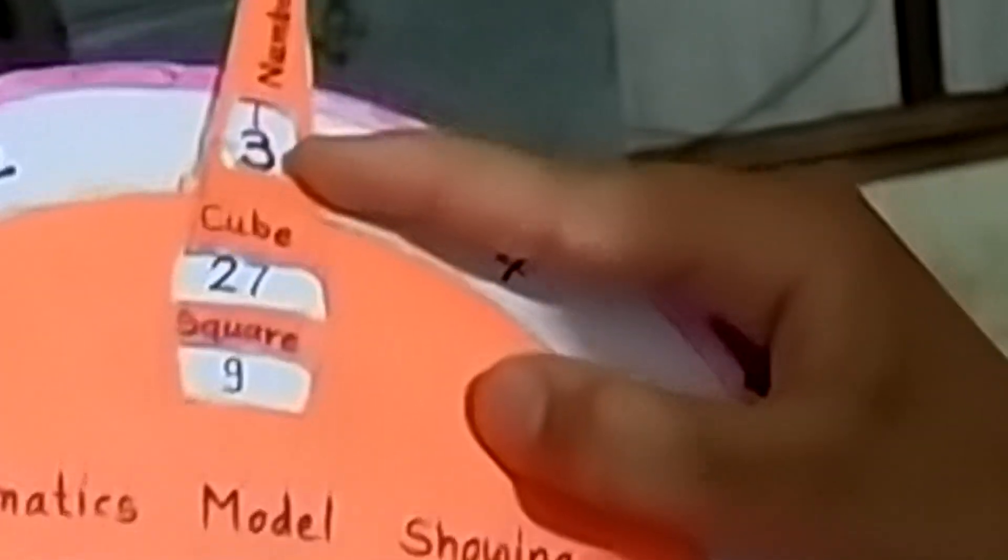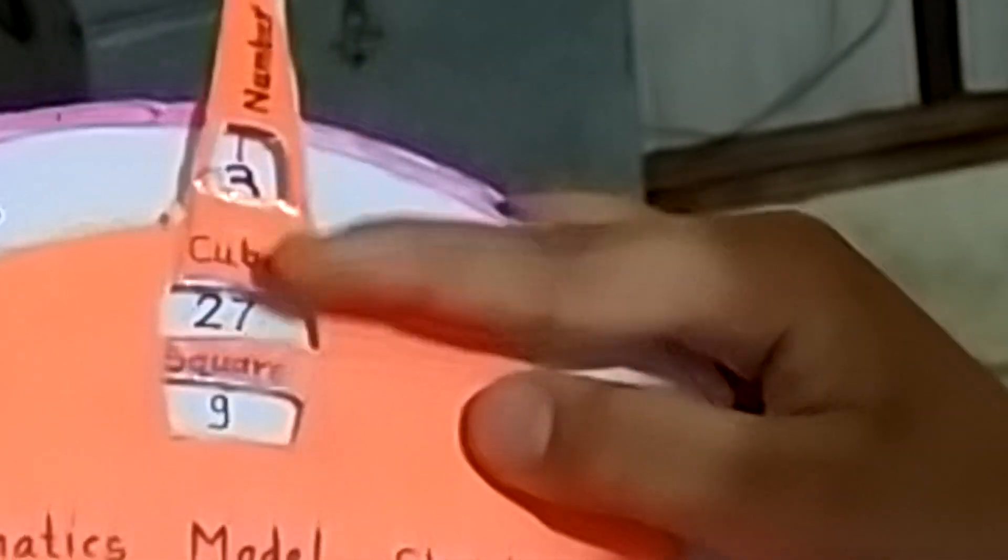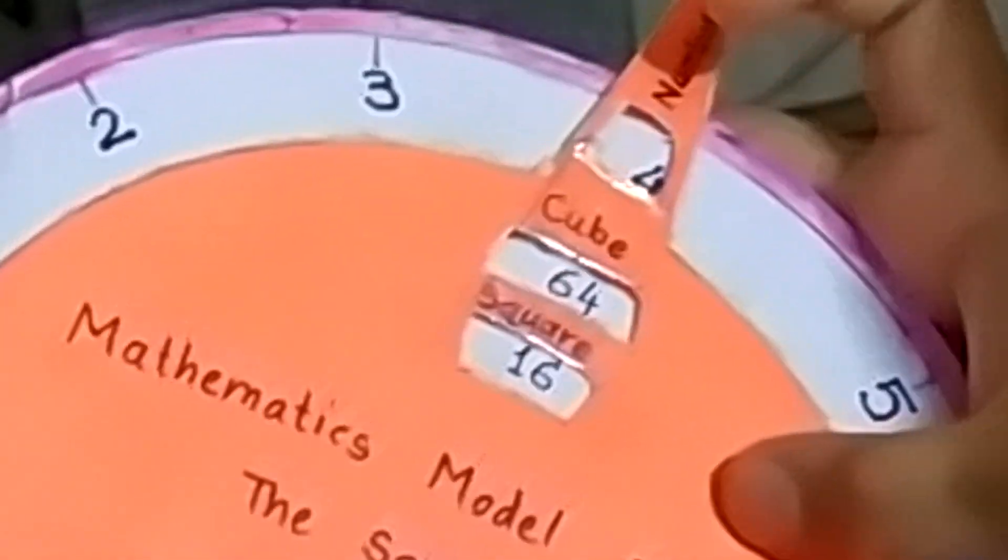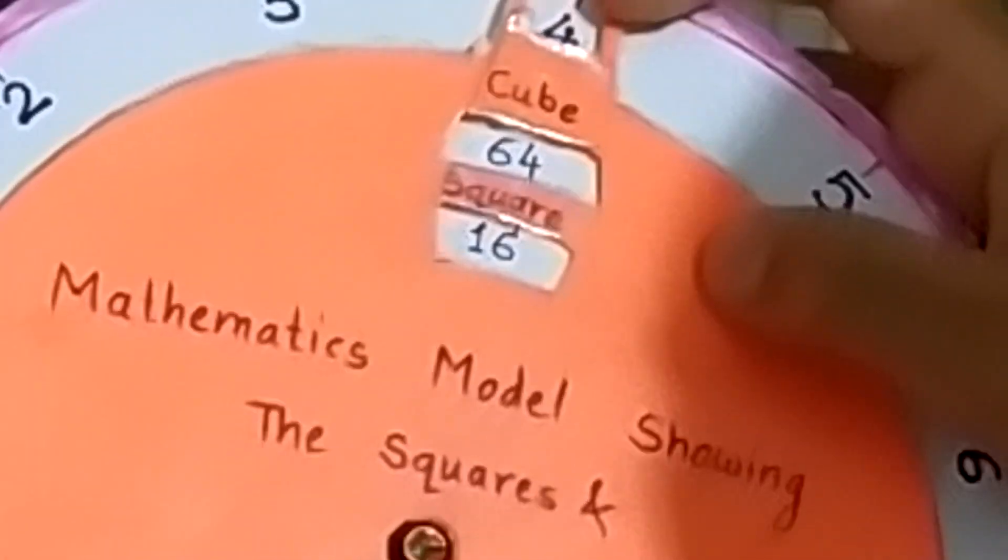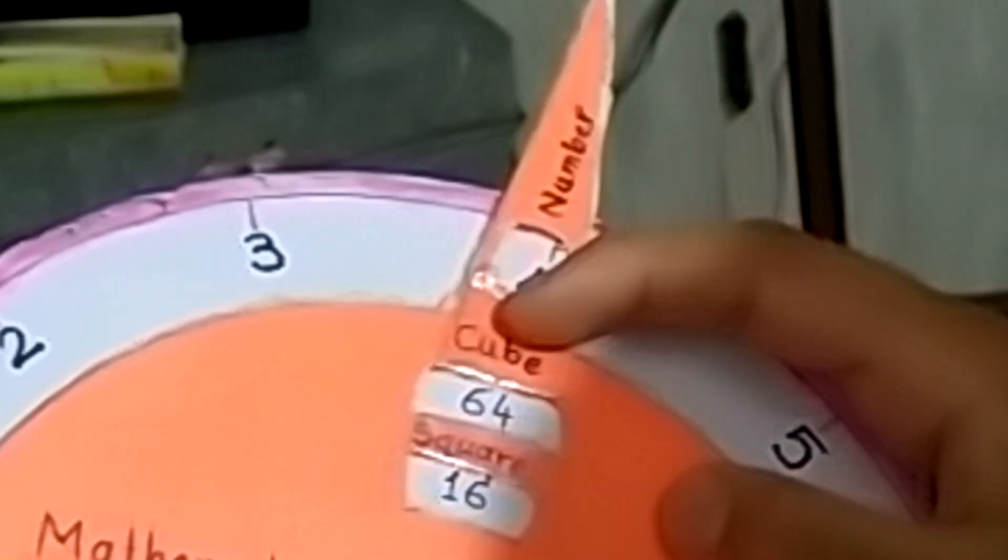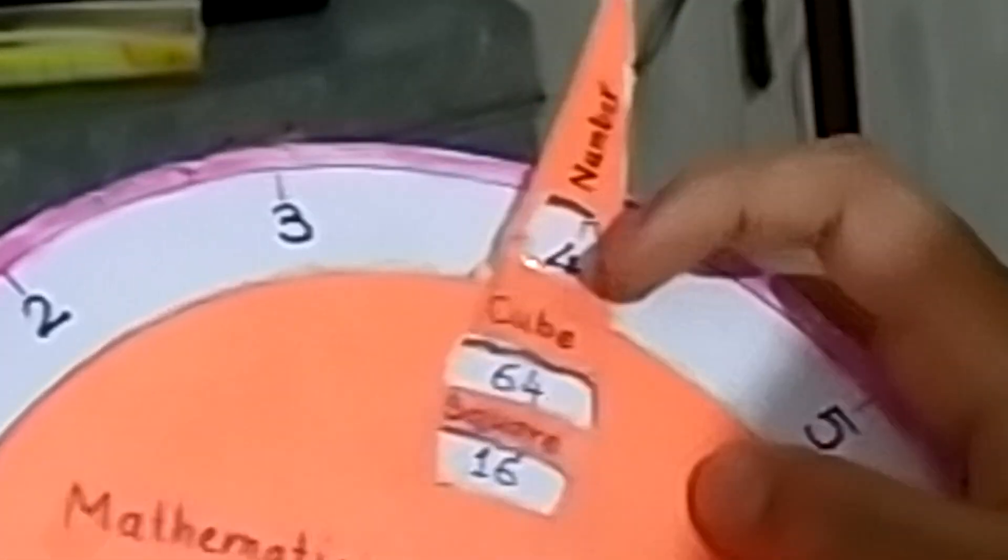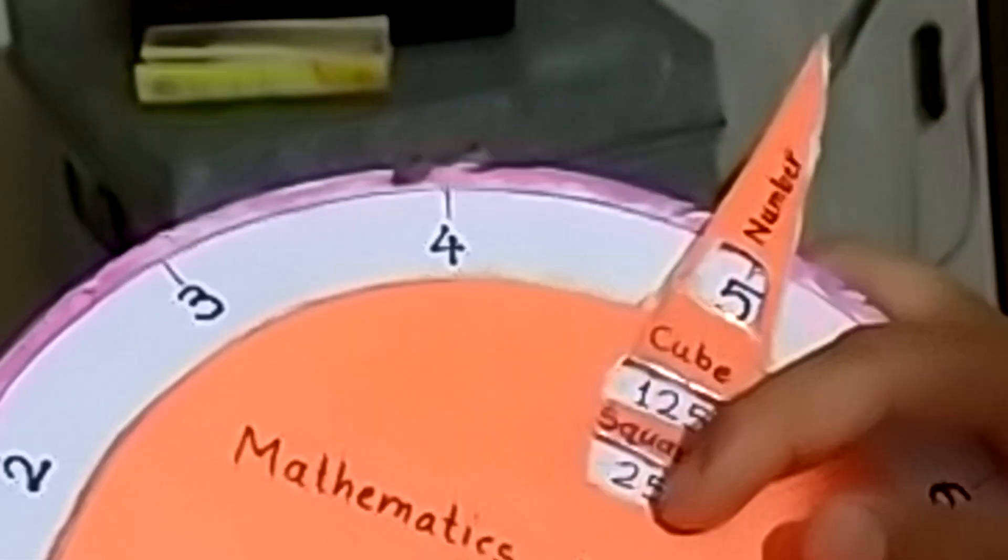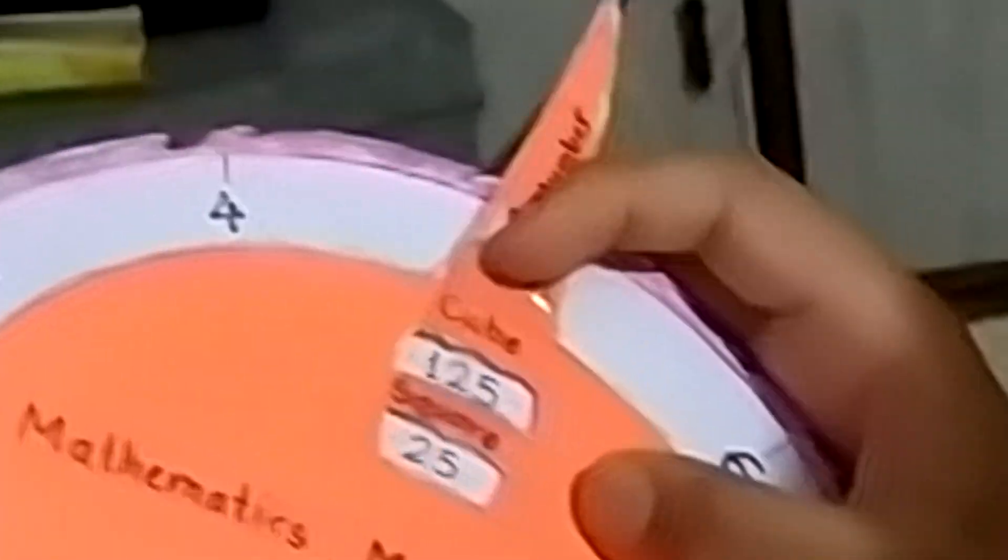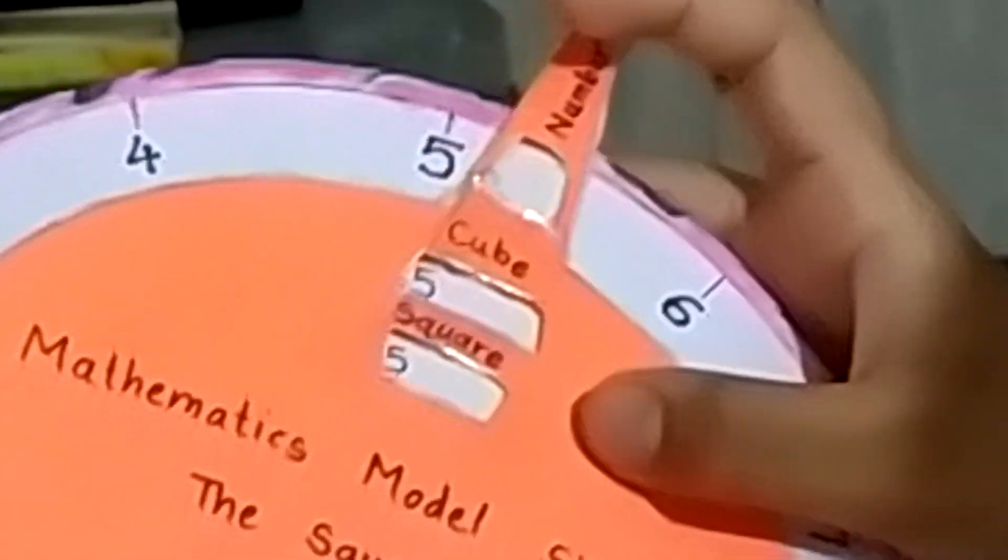Number 3, 3's square is 9, 3's cube is 27. 4's square is 16 and 4's cube is 64. 5's square is 25 and 5's cube is 125.